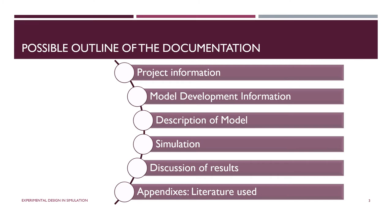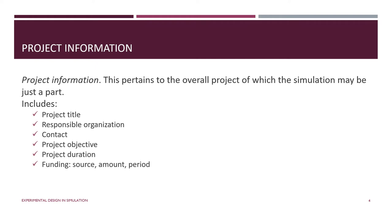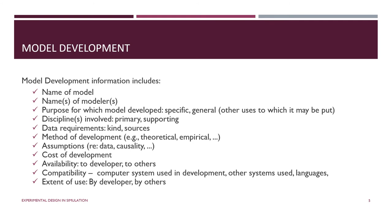Included in project information are elements like the title of the project, who did it, the organization and individuals responsible for the study, contact information for more than one individual, the objective of the study — which is one of the first things you want to establish — the date range when it was done, and possible funding sources. Anything considered overall project information goes into this category.